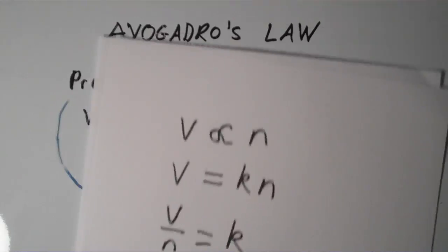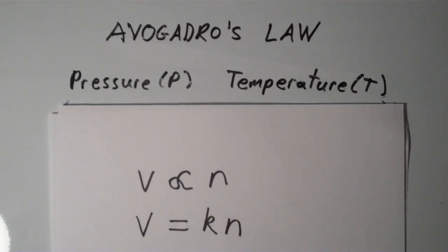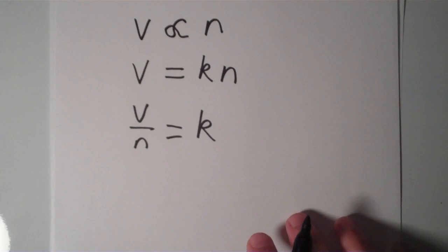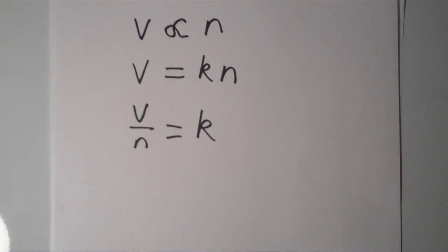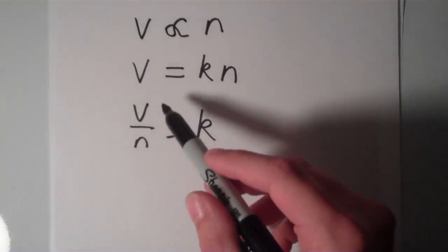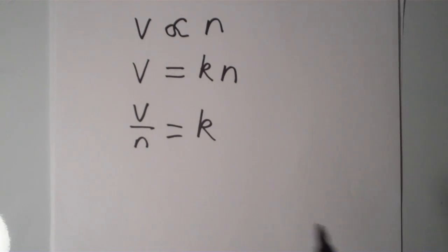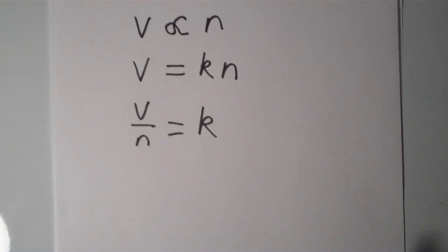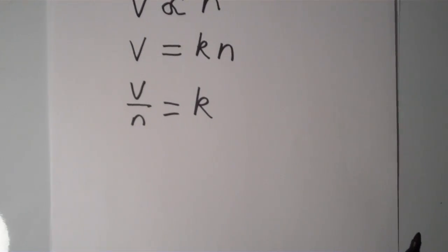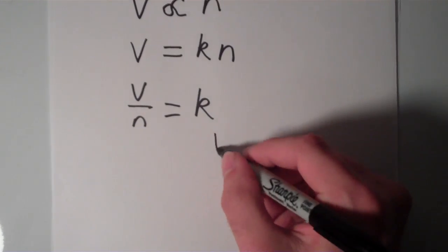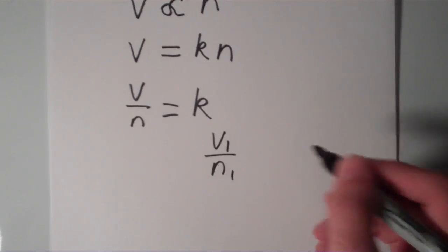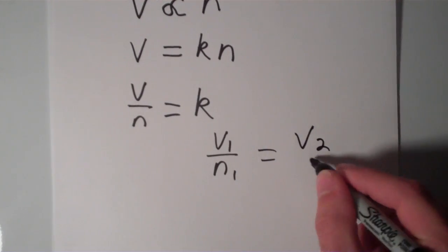So that means, as long as I keep the pressure and the temperature constant, if I have two different conditions with two different volumes and two different amounts, the quotient of the volume to the amount is always going to be the same constant, K. So, in other words, V1 over N1 is equal to V2 over N2.